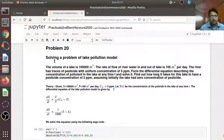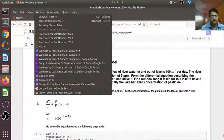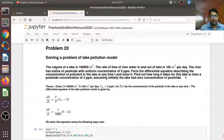This is problem number 20, solving a problem of lake pollution model. We will take up a particular problem for this. The volume of a lake is 1 lakh meter cube and the rate of flow of river water in and out of the lake is 100 meter cube per day.